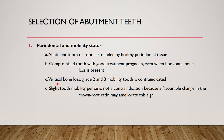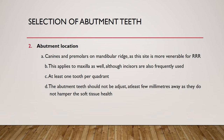Vertical bone loss grade two and grade three are contraindicated due to severe mobility. Grade one mobility is not a contraindication because of a favorable change in the crown-root ratio — by reducing the crown and preparing the abutment, we can stabilize the teeth. However, grade three vertical bone loss is definitely contraindicated.